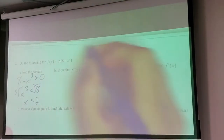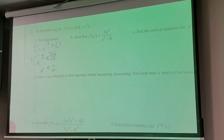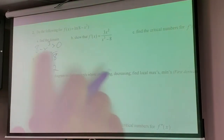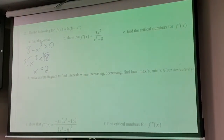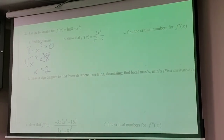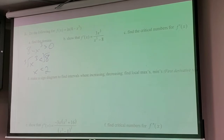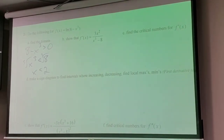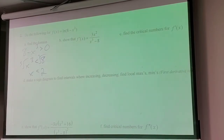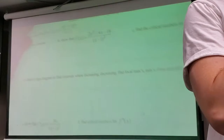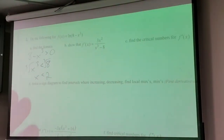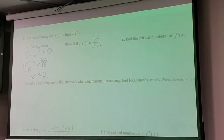You could subtract the 8 and divide by negative, and the sign flips. Take a minute and do part (b). On a test or quiz if I give you 'show this is the derivative' and you can't do it, let it go - you can do the rest of the problem because I told you what the derivative is.